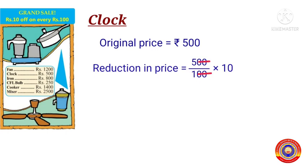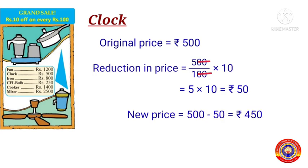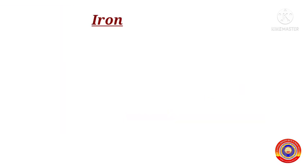After cancelling the zeros from both the numerator and the denominator, we get the reduction in price as 5 × 10, that is equal to 50 rupees. Therefore the new price is equal to 500 minus 50, that is equal to 450 rupees.